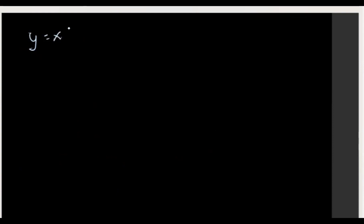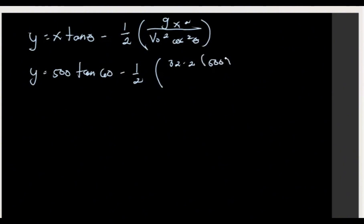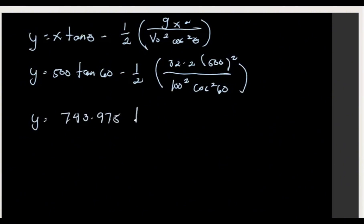Substituting values: y equals 500 times tangent 60° minus one-half times 32.2 times 500 squared over 100 squared times cosine squared 60°. This gives y equals 743.975 feet. This is our answer — the height of the hill.